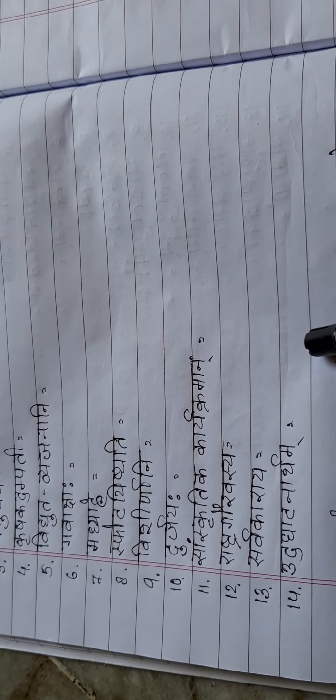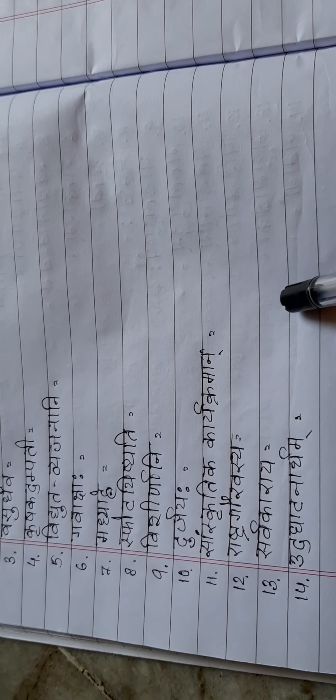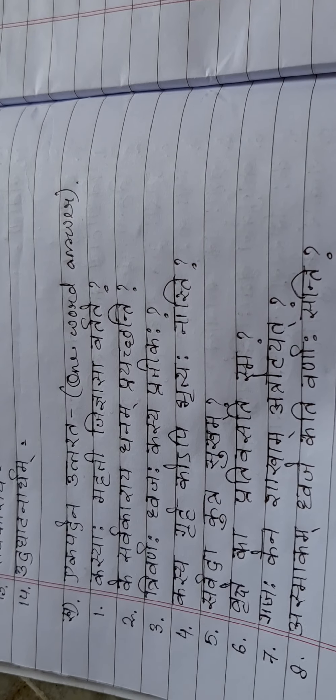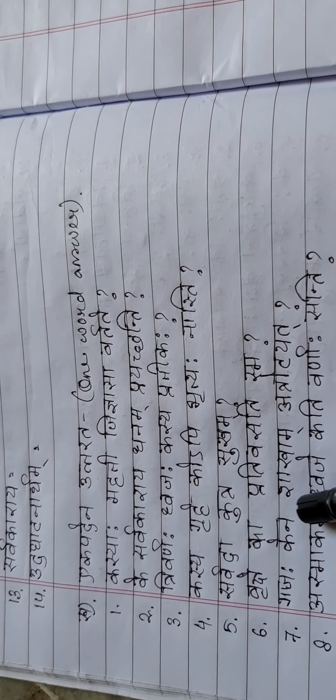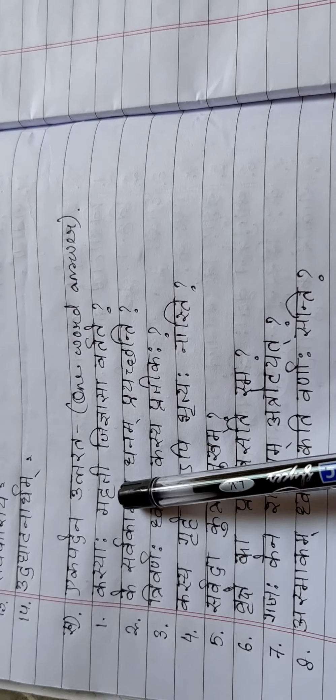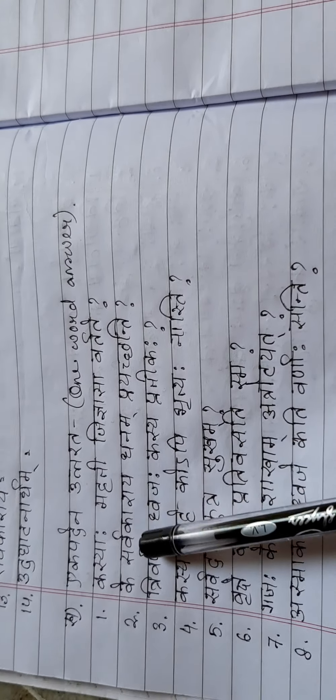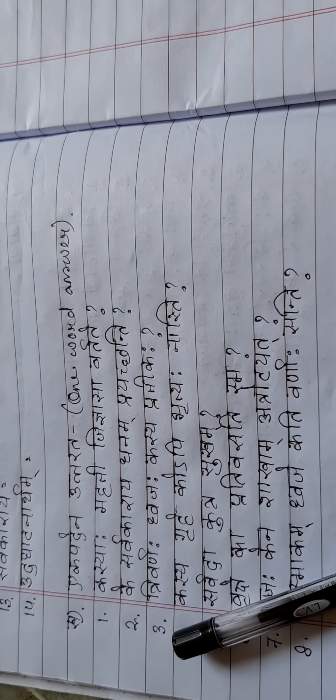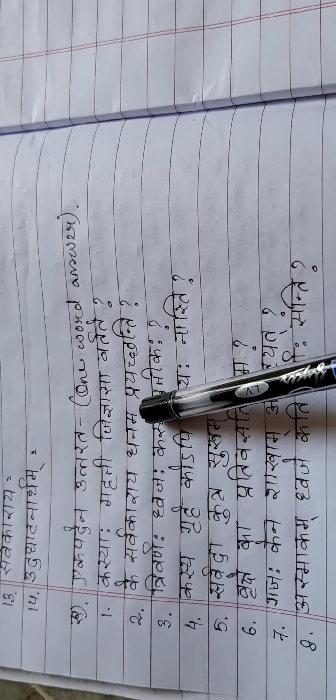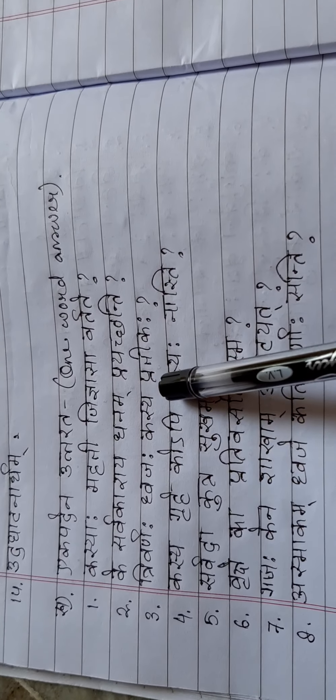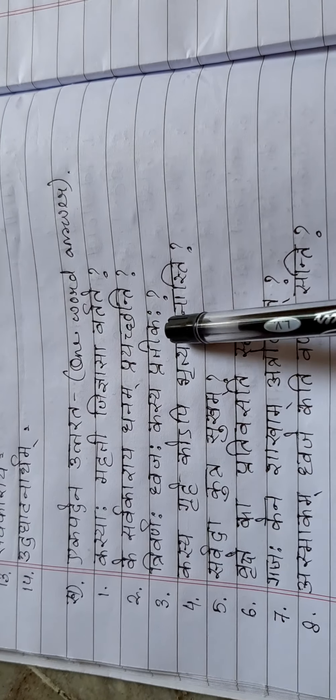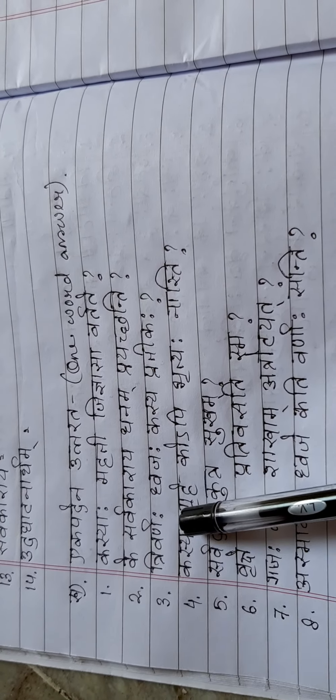Aek Padina Uttarad means one word answer. Kashyaha Mahati Jigyasa Vartati - Who is having lots of questions? Ke Sharvakaraya Dhanam Prachanti - Who are giving money to the government? Trivarnaha Dhvajaha Kashyapratikaha - So what is the symbol of Trivarnaha Dhanam, Tricolour flag? Kashyagrihe Kapivhityana Asti - In whose house there was no monkey?